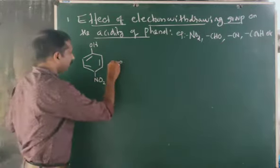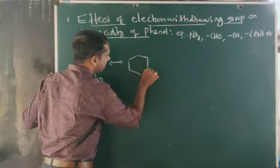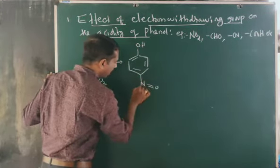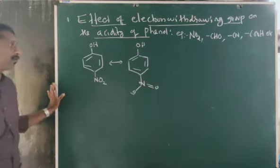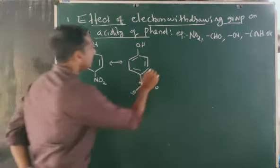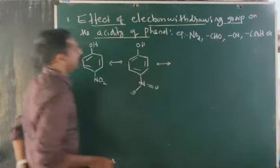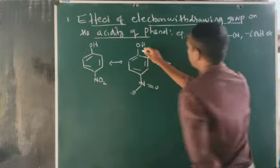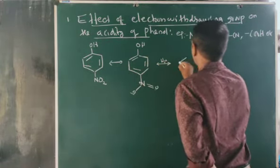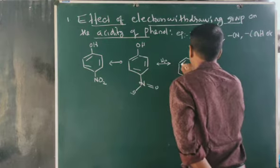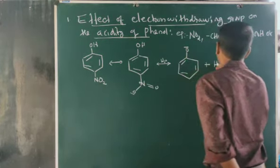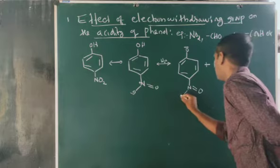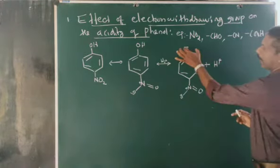We can see that the actual structure of the NO2 group is like this: N double bond O and O minus, with a positive charge on nitrogen. This is the actual structure of the NO2 group. By resonance, in water the phenol will change into phenoxide ion. That means here it will become O minus and H+. Here is our NO2 group: N double bond O, O minus, N plus. This is our phenoxide ion with the nitro group present and the O minus.